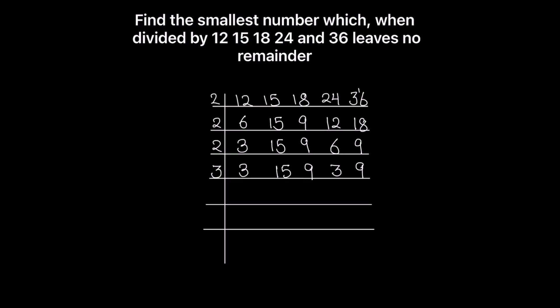These are all divisible by 3, so let's use 3 to divide the numbers: 3×1=3, 3×5=15, 3×3=9, 3×1=3, 3×3=9. Using 3 again: this gives 1, 5 stays as is, 3×1=3, 3×1=3. Now 5 is only divisible by 5, so 5×1=5. All numbers are now fully divided.